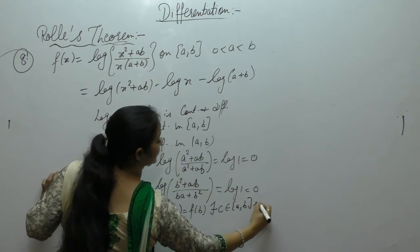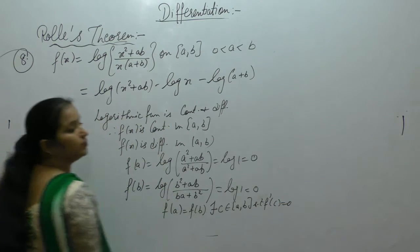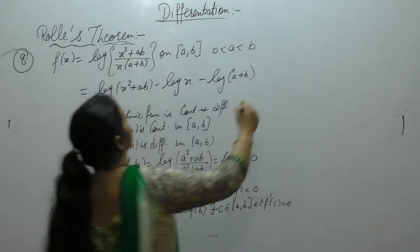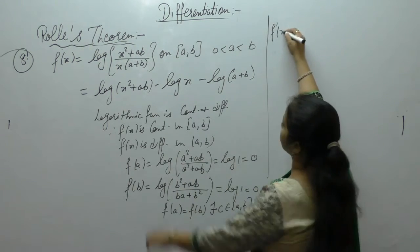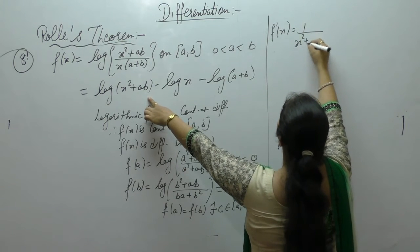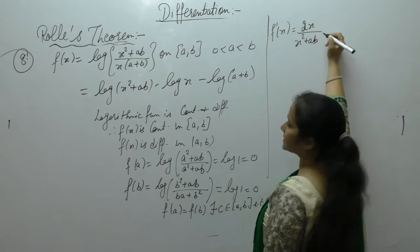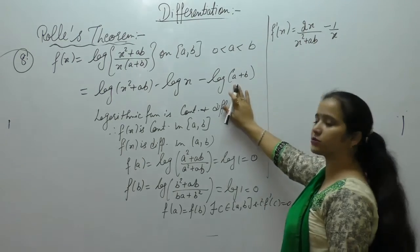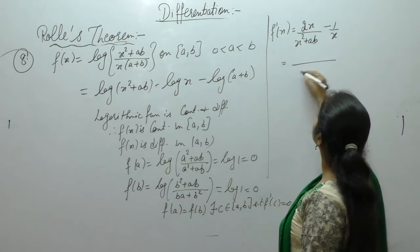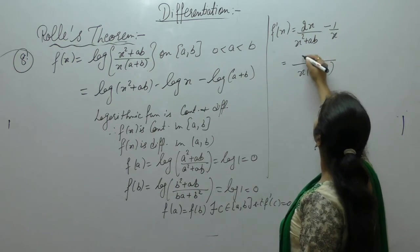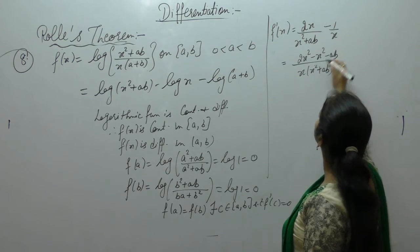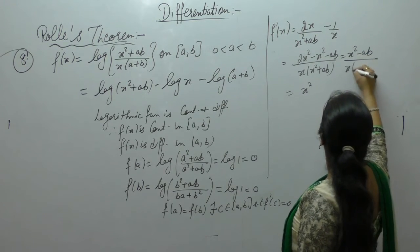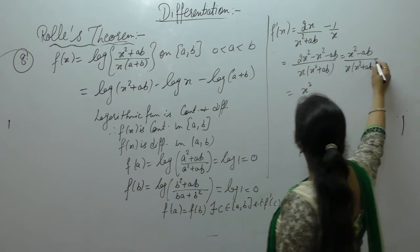Therefore there exists c in (a,b) such that f'(c) = 0. Taking the derivative: f'(x) = (1/(x²+ab)) · (2x) - (1/x) = (2x²-(x²+ab))/(x(x²+ab)) = (x²-ab)/(x(x²+ab)).